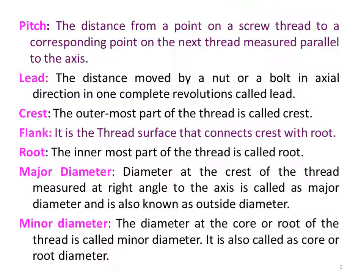Crest — the outermost part of the thread is called the crest. What is flank? It is the thread surface that connects the crest with the root. What is the root of a screw thread? The innermost part of the thread, or the bottom groove between the sides of two adjacent threads, is called the root.